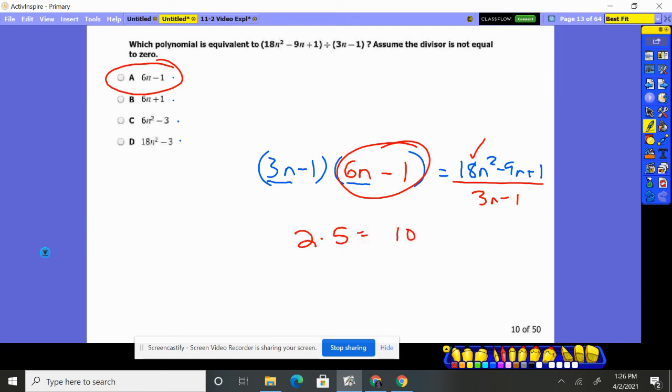Well, if you're trying to get this piece by itself, you divide by 2. Yeah, move it over. You're going to be left with that. And that's why we're left with 6n minus 1. 6n minus 1 is basically a factor of it. And when you divide by 3n minus 1, that's what you get.